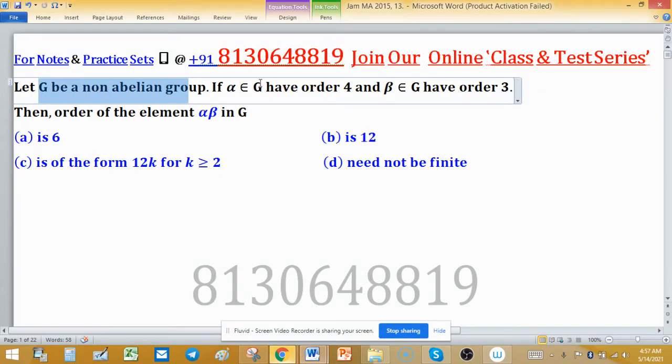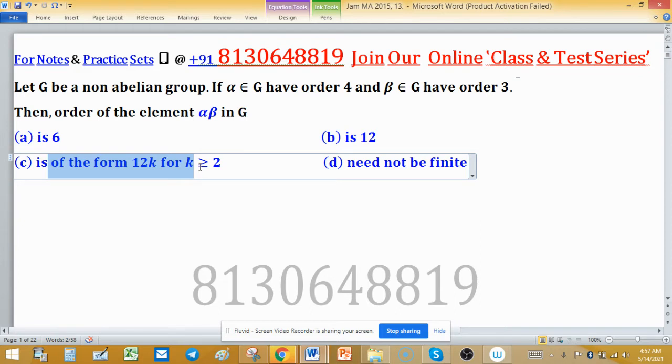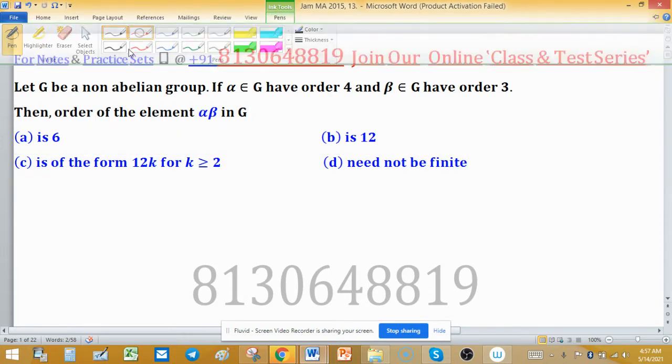Let G be a non-abelian group. If α belongs to G having order 4, and β is another element of G having order 3, then the order of the product αβ in G: (a) is 6, (b) is 12, (c) is of the form 12k where k ≥ 2, and the last option (d) need not be finite.